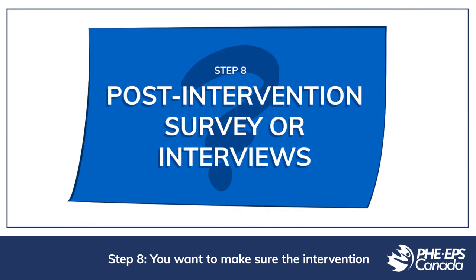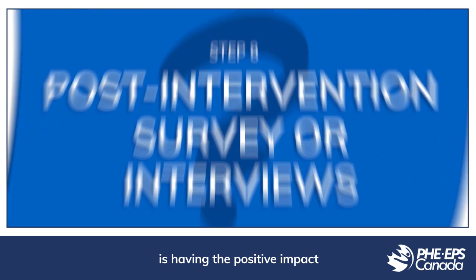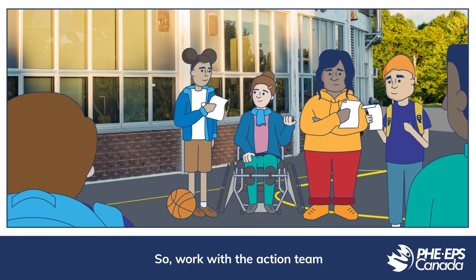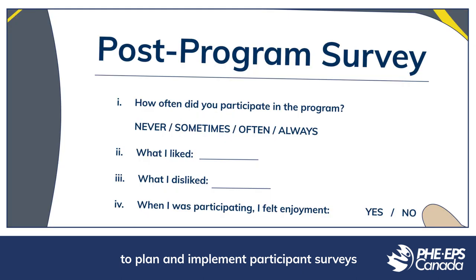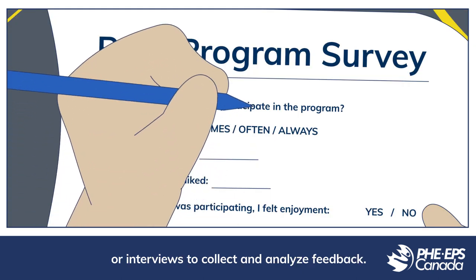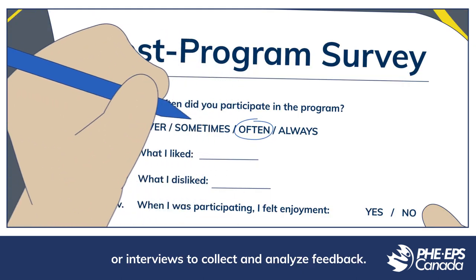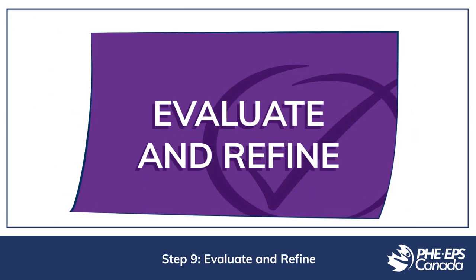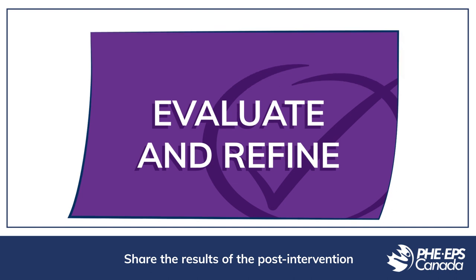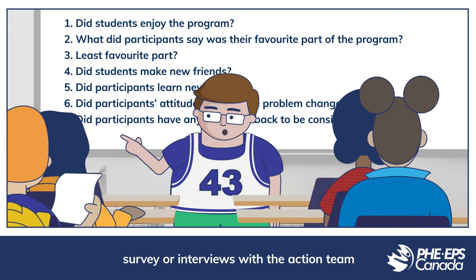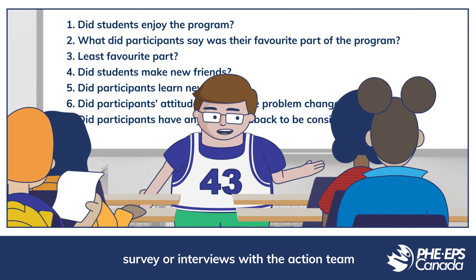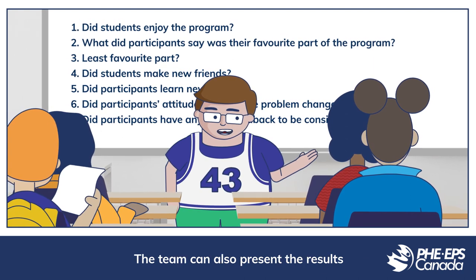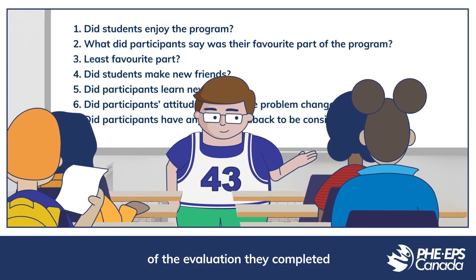You want to make sure the intervention is having the positive impact the action team hoped for. Work with the action team to plan and implement participant surveys or interviews to collect and analyze feedback. Step 9: Evaluate and refine. Share the results of the post-intervention survey or interviews with the action team and generate a discussion about the results. The team can also present the results of the evaluation they completed with the participants.